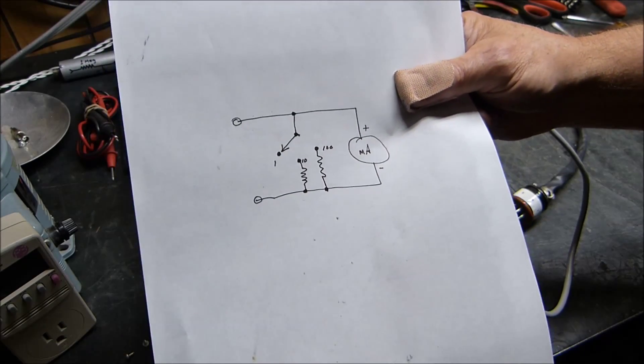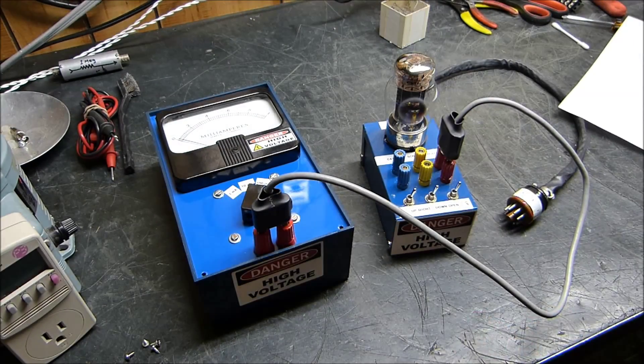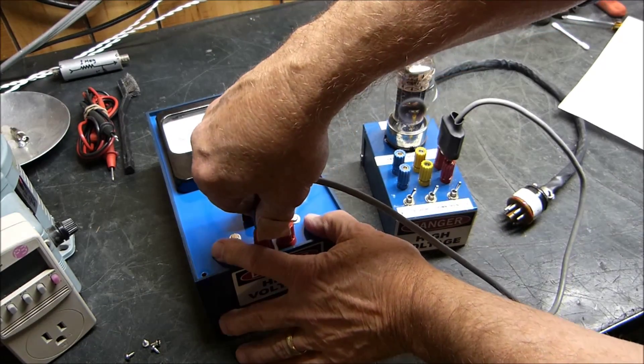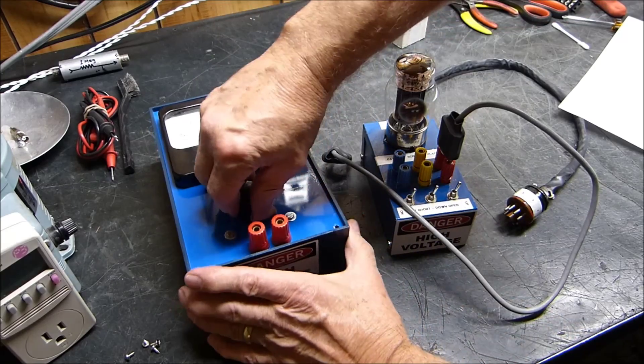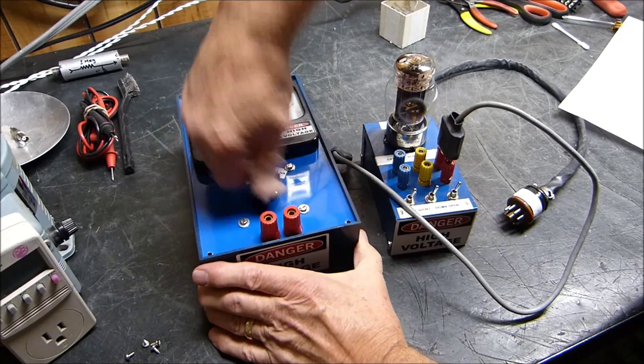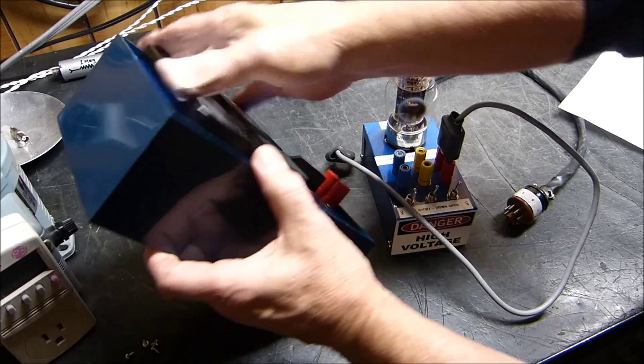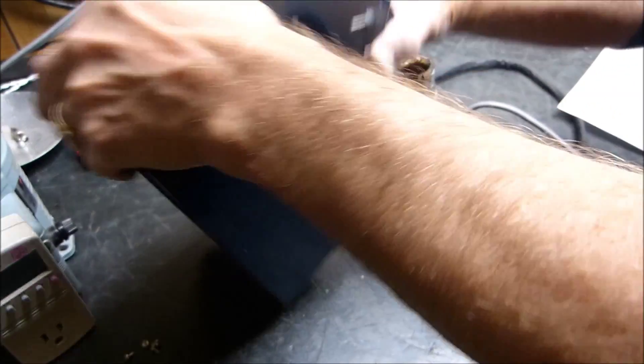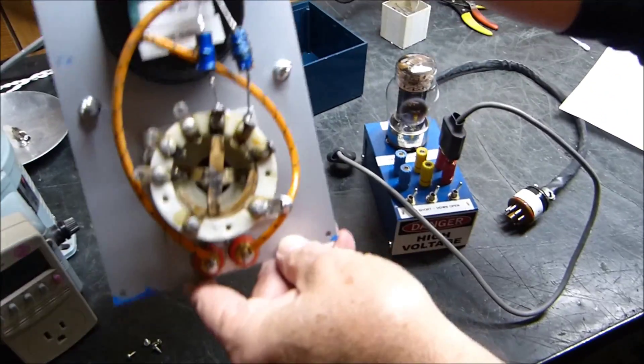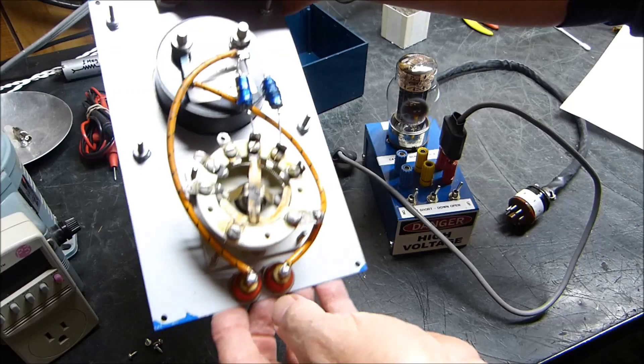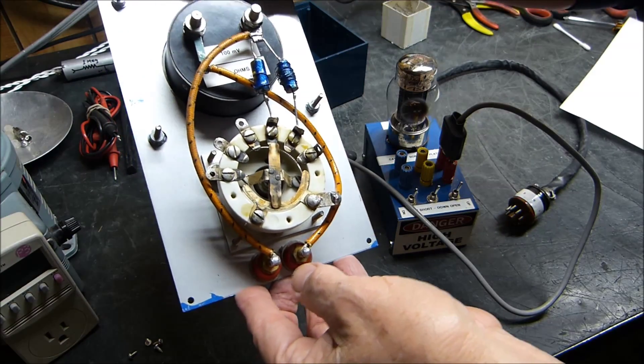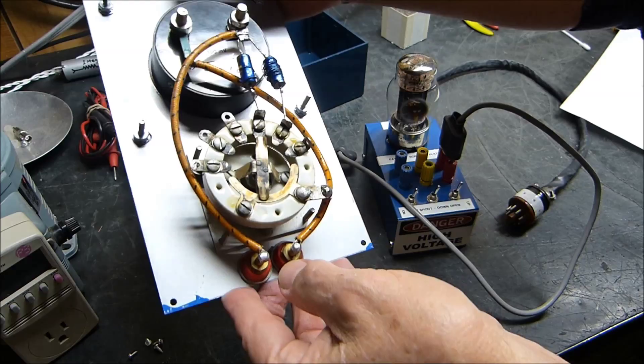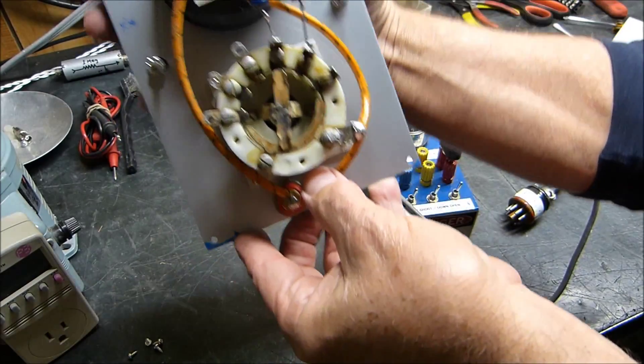I don't know if there's any videos out there on YouTube about this, but I don't think there are about how to make shunts for meters, at least the way I do it. I'll show you the way I do it. I thought about showing you how I did the shunt during the making of, but it's just too tedious trying to make it a camera thing and everything.